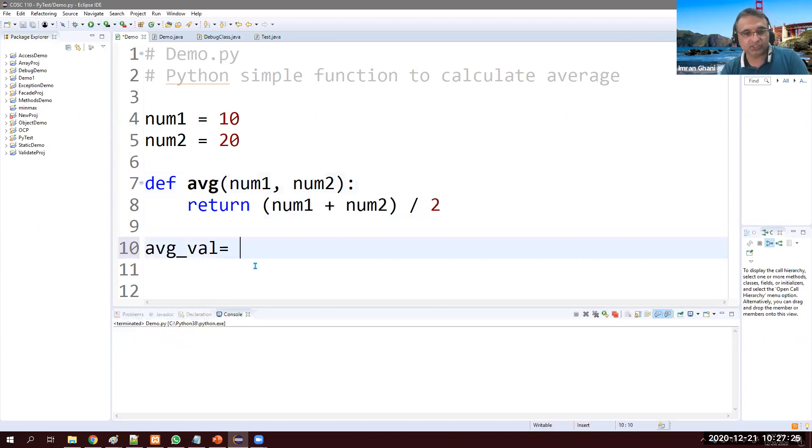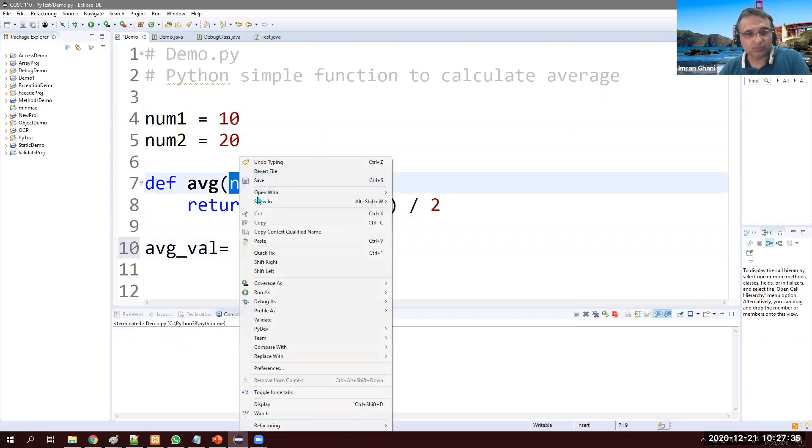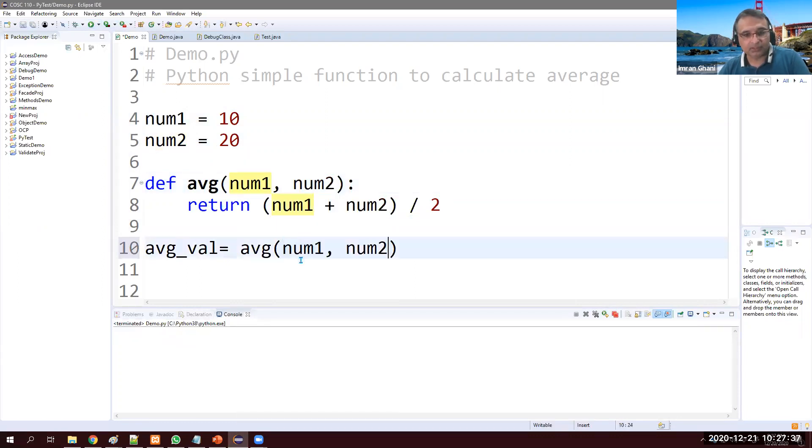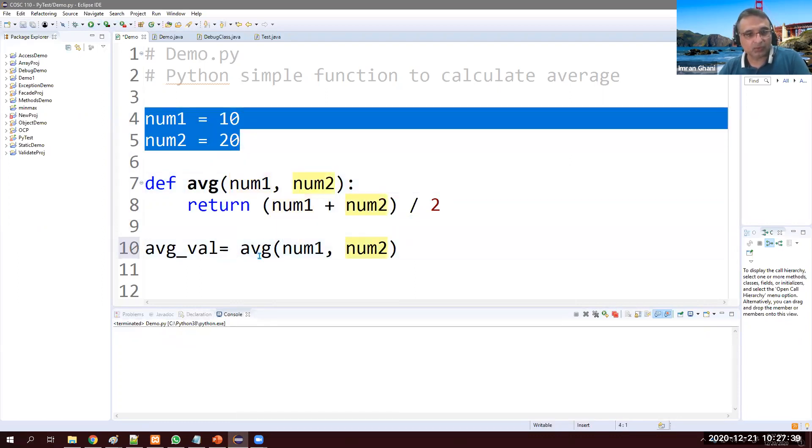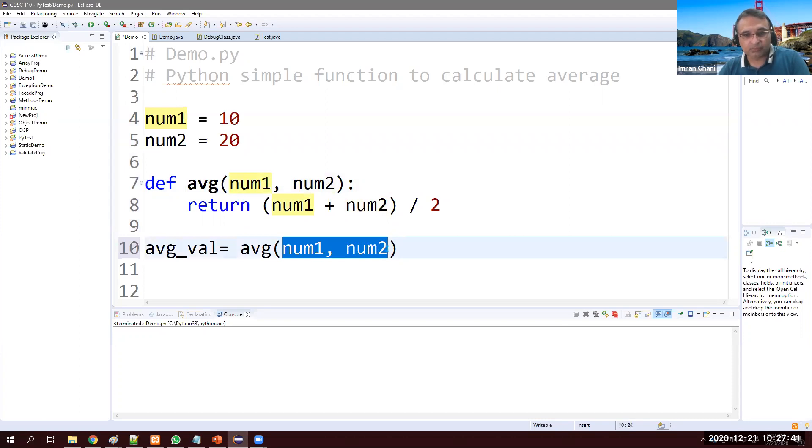So we need to call this function: avg_val equals avg. We need to pass these two values num1 and num2. I can simply copy these two. Put it there because these two are going here, we're passing them, they go here: 10 and 20, 10 plus 20 is 30, divided by 2 is 15, and it will return us 15.